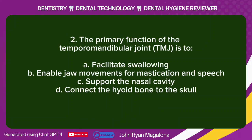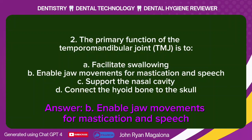Question 2: The primary function of the temporomandibular joint (TMJ) is to: A. Facilitate swallowing. B. Enable jaw movements for mastication and speech. C. Support the nasal cavity. D. Connect the hyoid bone to the skull. Answer: B. Enable jaw movements for mastication and speech.